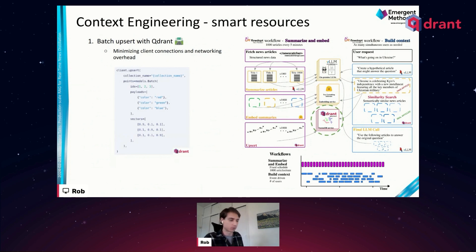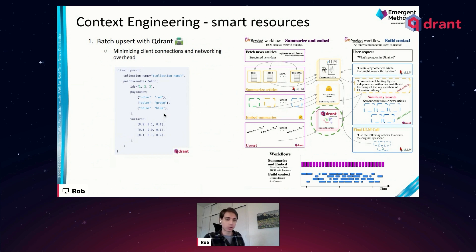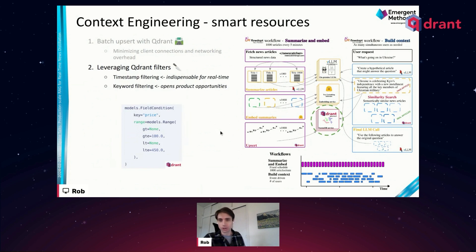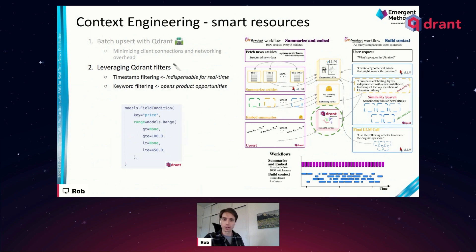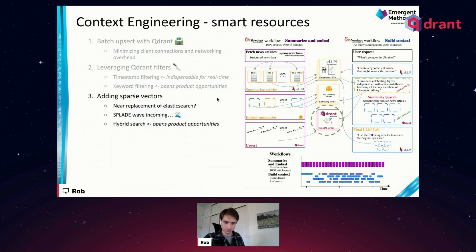Now the star of the show — Qdrant. It's really coming into its own. Anyone riding the Qdrant wave is just reaping benefits — it seems monthly new massive features get added. Two months ago, Sparse Vector support got added. For us, we're doing so much upsert that we need to minimize client connections and networking overhead, so batch upsert is key. Filters are huge — we can't be searching on news articles from a month ago if the user is asking about the last 24 hours. Timestamp filtering in Qdrant is huge.